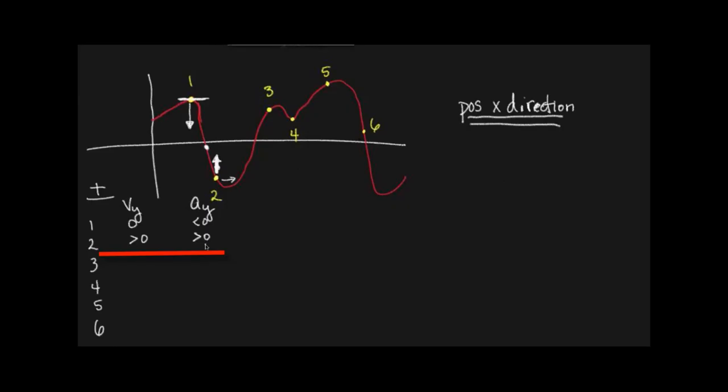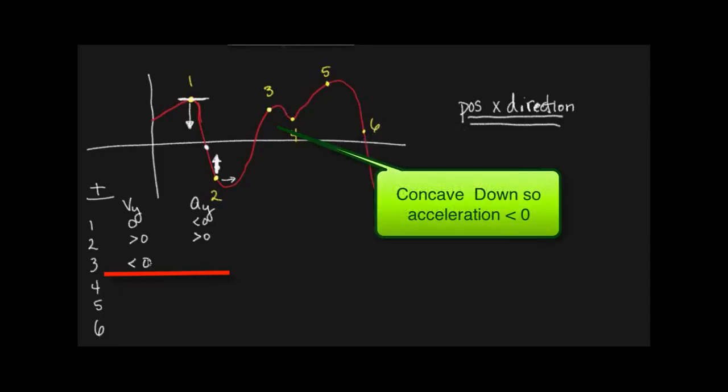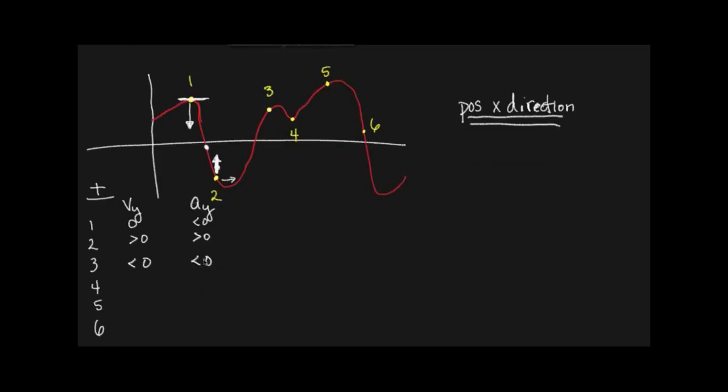Point three - if we're standing right here and we move to the right, it's decreasing. Good, so it would be less than zero. Do you see how we did that? And since it's on a concave down, it's negative. Good. Getting a little clearer?